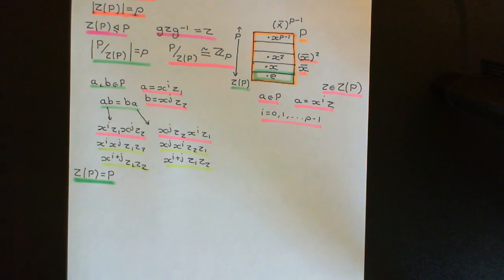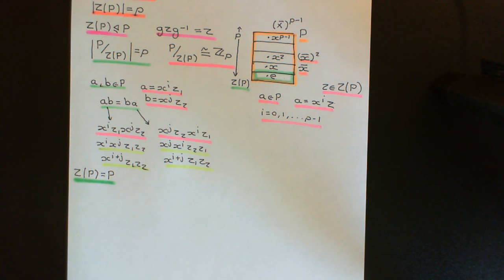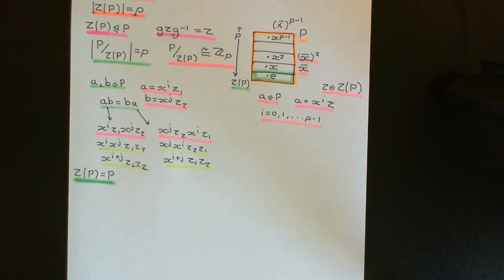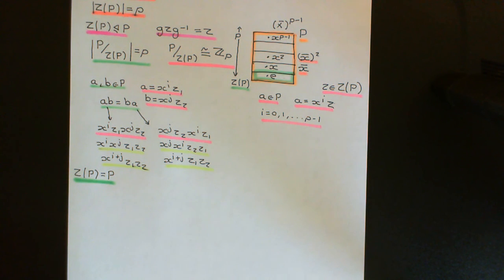We have proven a contradiction: by assuming P is non-abelian (centre ≠ whole group), we derived that P is abelian. So we must conclude that the centre of our group of order P squared is equal to the entire group — i.e., any group of order P squared is abelian and commutative. We will use this fact in the next video to prove the characterization theorem that there are only two isomorphism classes of groups of order P squared.